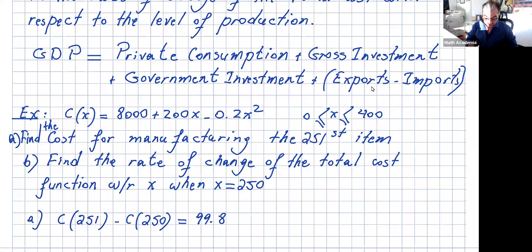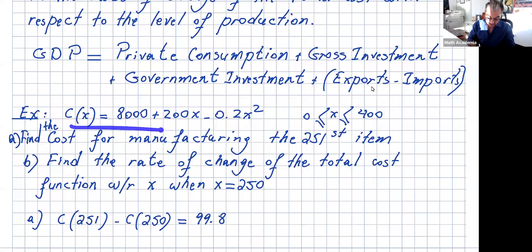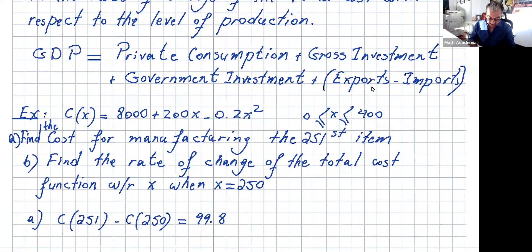Now let's talk about marginal analysis with a cost function example. The cost function is given as C(x) = 8000 + 200x − 0.2x², valid for producing zero to 400 items. Part A asks to find the cost of manufacturing the 21st item, which you calculate directly. Part B asks to find the rate of change of the total cost function with respect to x when x equals 250.